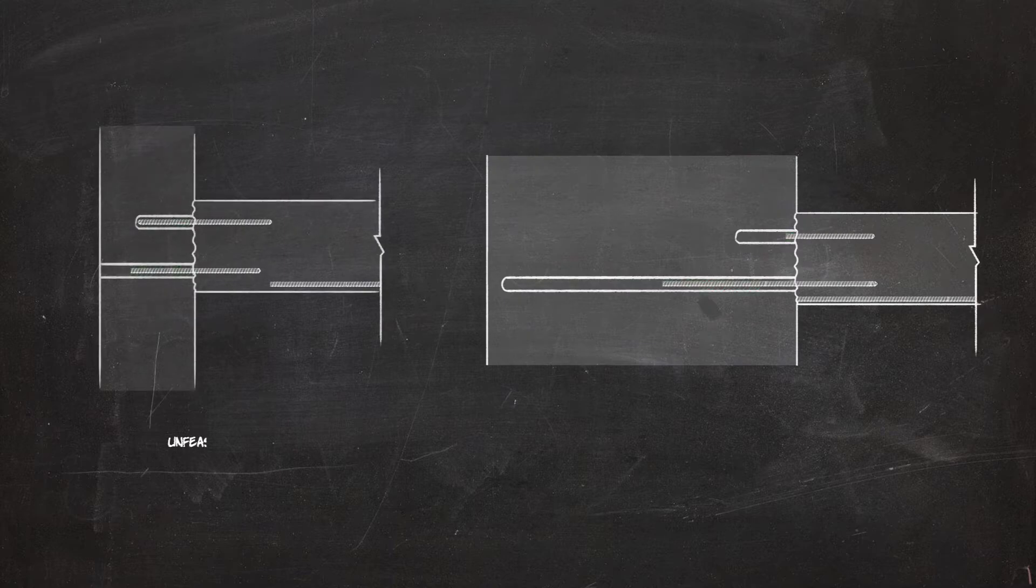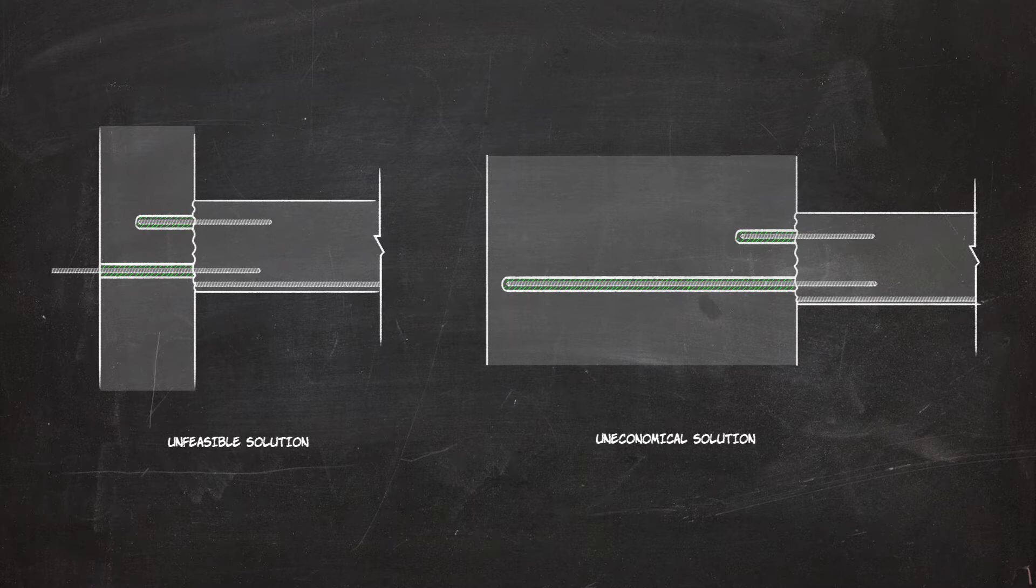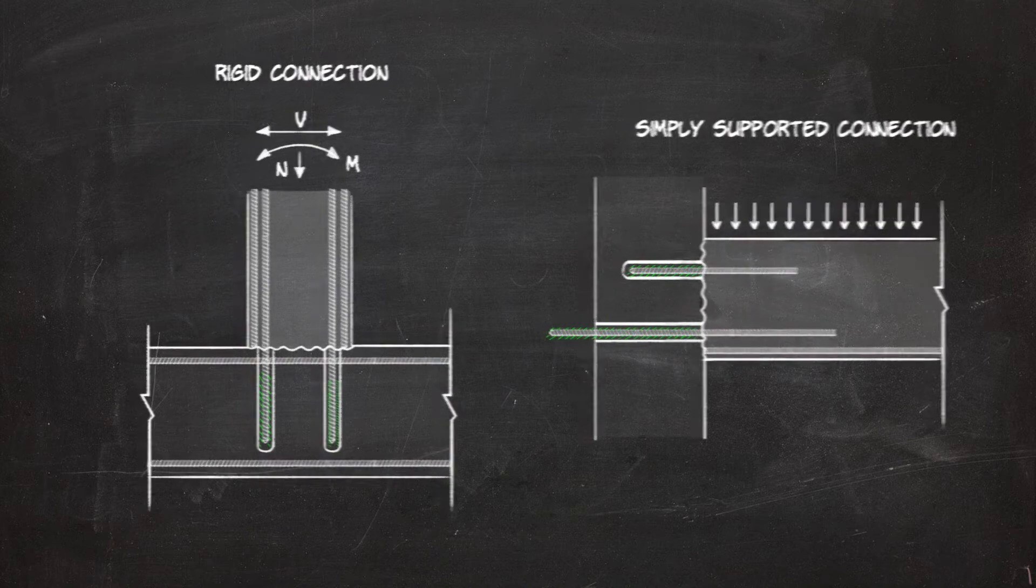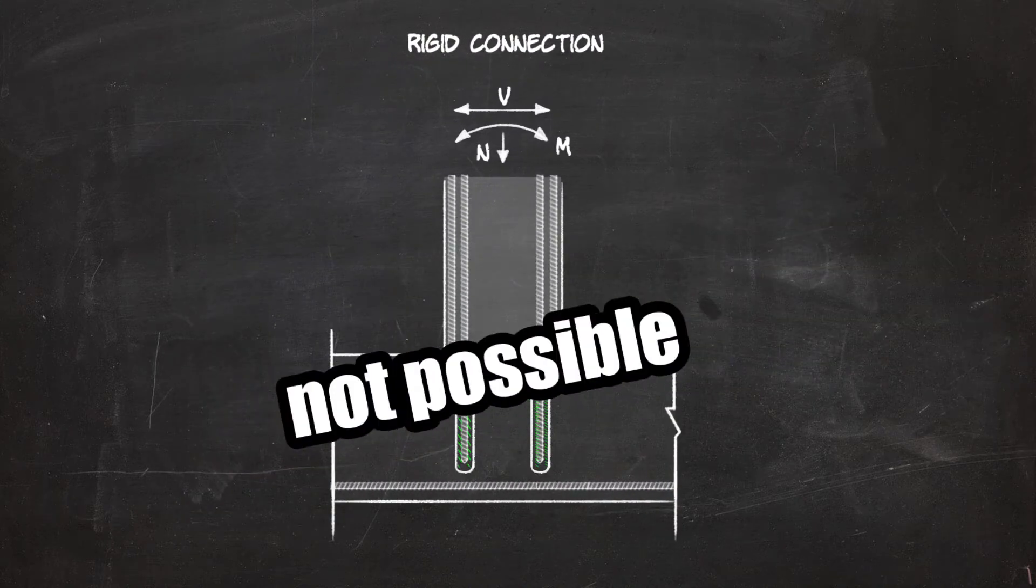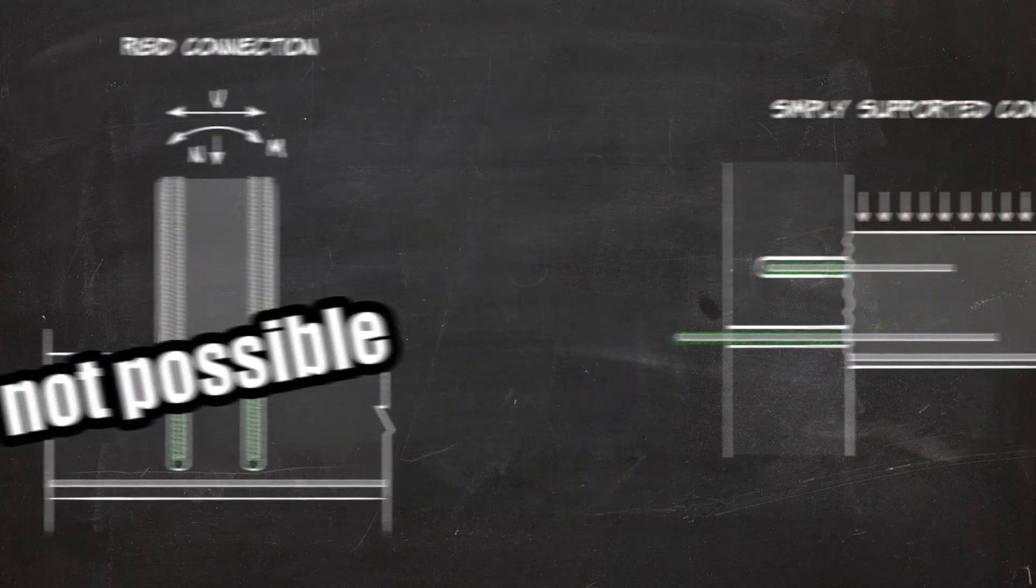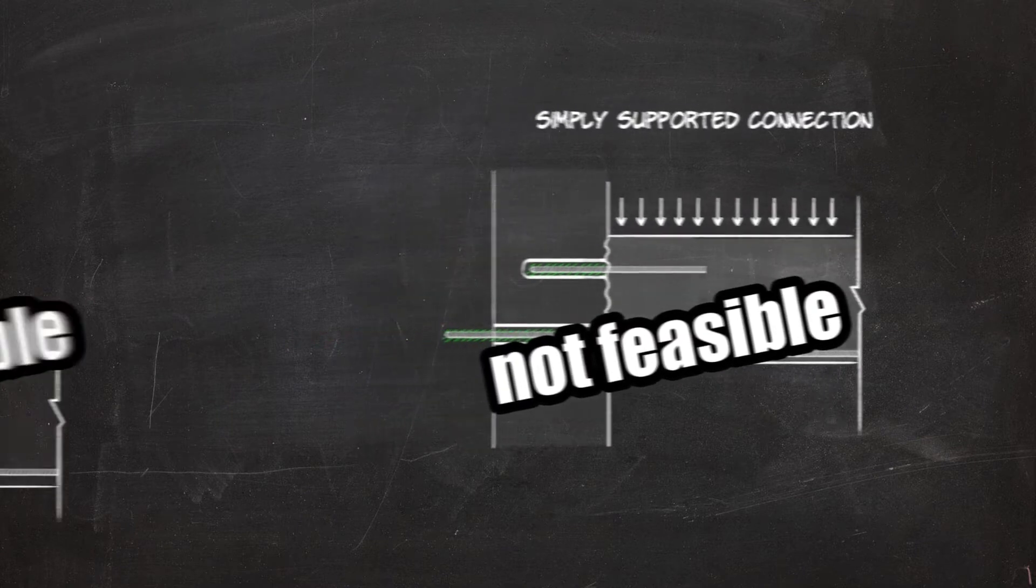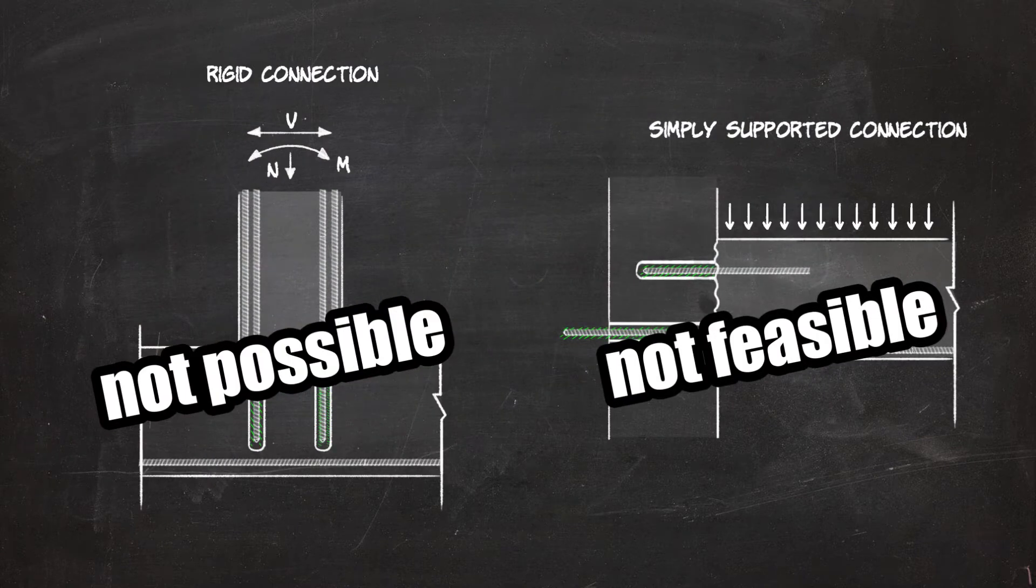In addition, following the requirements of Eurocode 2, the design solution may be unfeasible or uneconomical due to the long anchorage lengths. Engineers today deal with two main problems. One, no design solutions are available for rigid connections. And two, solutions can be unfeasible or uneconomical in case of simply supported connections.